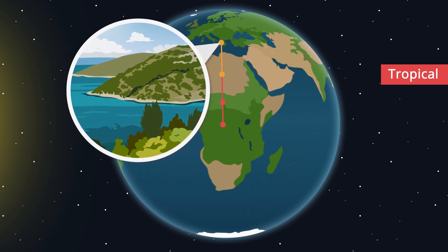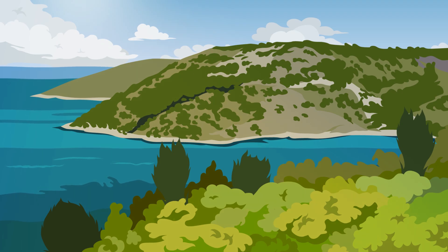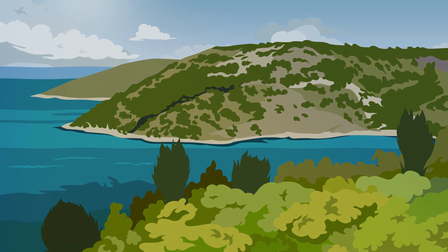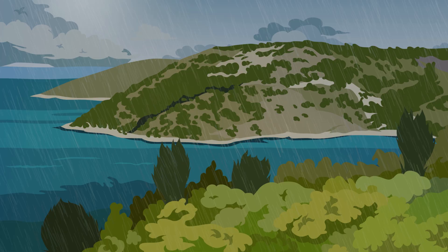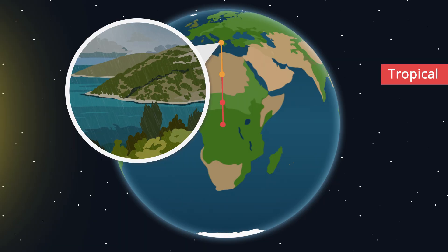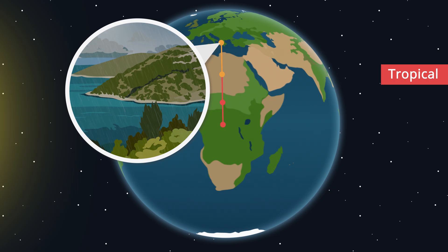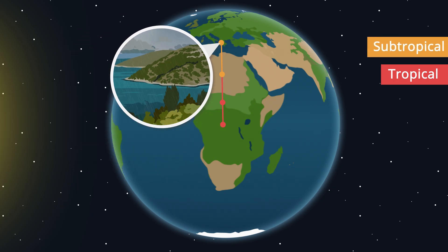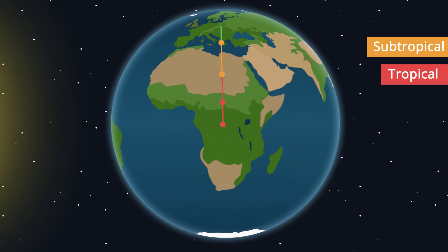A little further north we reach the Mediterranean. Here it is dry and very warm in the summer, while the winters are mild and bring more precipitation. This climate zone with dry, hot, and long summers and a short mild winter is called the subtropical zone.